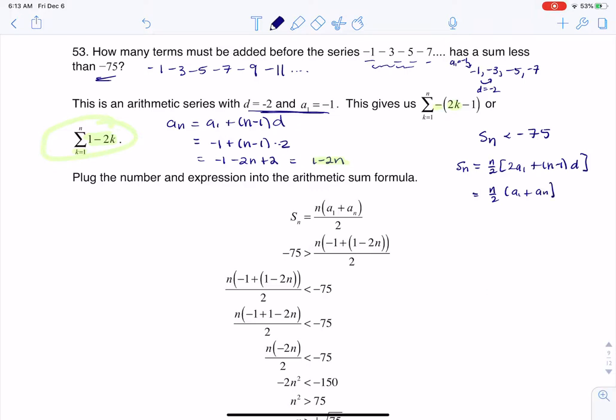And so for here, I'm going to use this second formula because I know a sub 1, that's negative 1. And I have a formula for a sub n that's 1 minus 2n. So I'm just going to play it out that way. And I would like this sum to be less than negative 75.